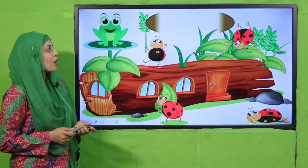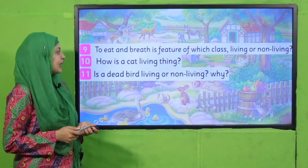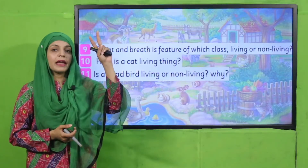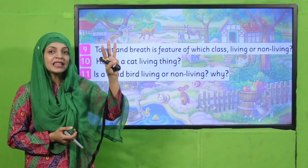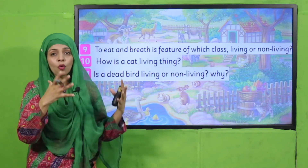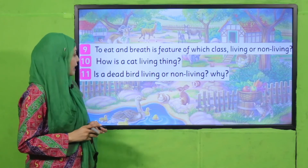Now is the time for evaluation. Quickly tell me: to eat and breathe is a feature of which class — living or non-living? Khana khana aur saans lena — kis ki characteristic hai, living ki ya non-living ki? Very good — living things. So how is the cat a living thing? Because it moves, it breathes, it eats, it drinks, it reproduces and it grows. So that is why a cat is a living thing.